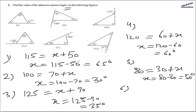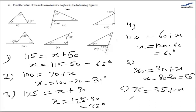In the sixth part, the exterior angle is 75 degrees, and the opposite interior angles are 35 and x. So x is equal to 75 minus 35, that is equal to 40 degrees.